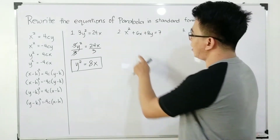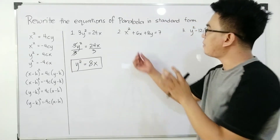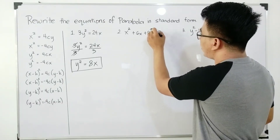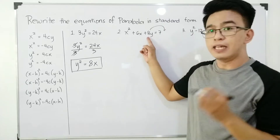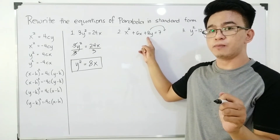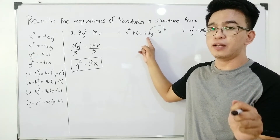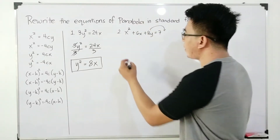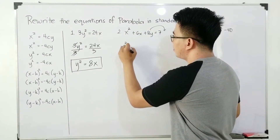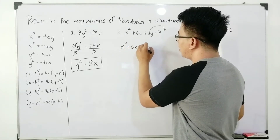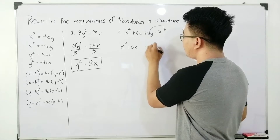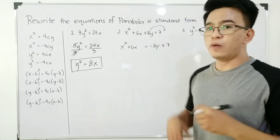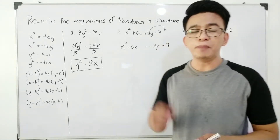Luckily, x² and 6x are already side by side. The next step is to transpose 8y to the other side of the equation. Remember, this one is positive, so when you transpose a term in an equation, it will change its sign — from positive it will become negative. So our new equation is x² + 6x = -8y + 7.